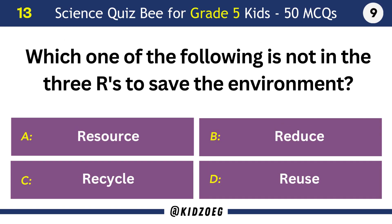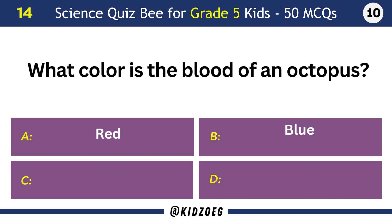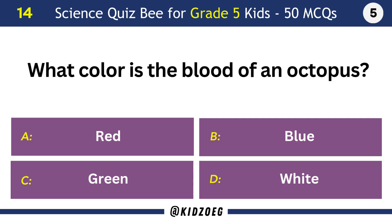Which one of the following is not in the three R's to save the environment? Resort. What colour is the blood of an octopus? Blue.